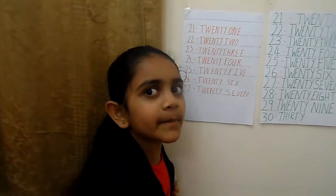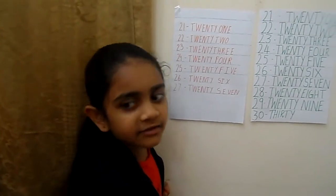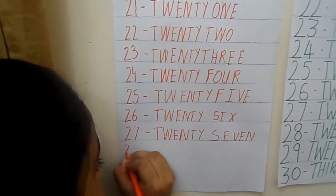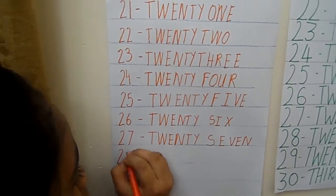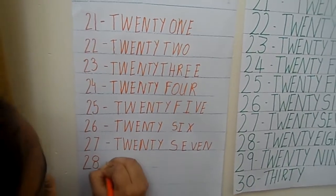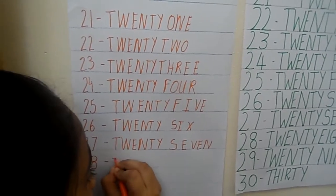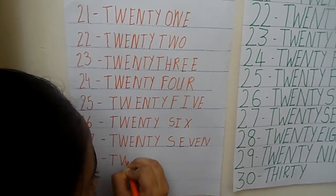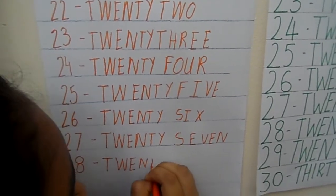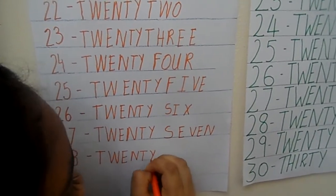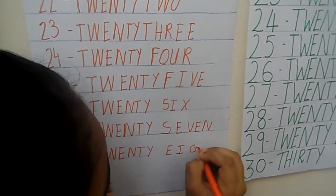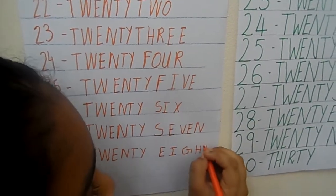Now let's see the next number. 28. So let's write the number name first: T, W, E, N, T, Y, E, I, G, H, T.